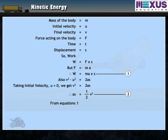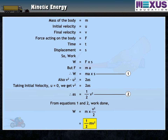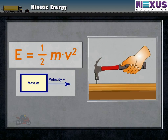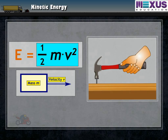So, from equations 1 and 2, work done W is equal to M multiplied by V² upon 2, which is equal to ½MV². Thus, kinetic energy of a body with mass M and moving with a velocity V is ½MV².